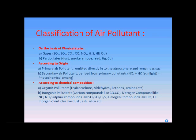According to origin, pollutants are classified as primary air pollutants and secondary air pollutants. Primary air pollutants are those which are emitted directly into the atmosphere and remain as such. For example, if NO2 is released, it remains as such in the atmosphere.